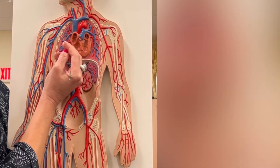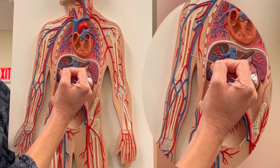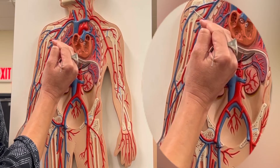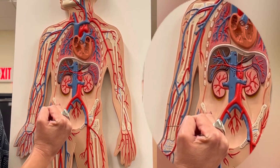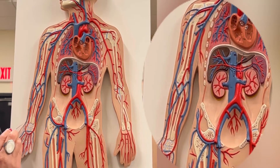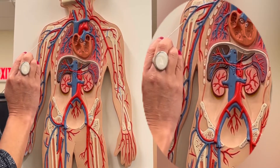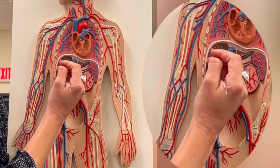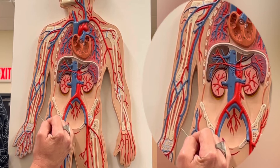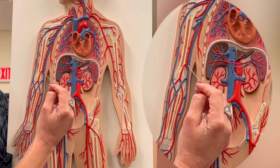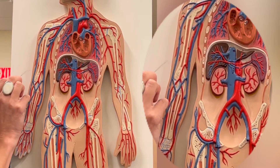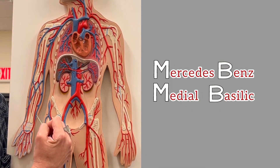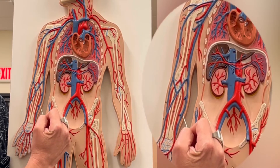We have a vein on the medial aspect of the upper limb and another vein on the lateral aspect. The vein on the lateral aspect of the forearm and arm — the lateral aspect of the upper limb — is named cephalic vein. The vein on the medial aspect is called basilic vein. The basilic is always medial and the cephalic is always lateral. One way to remember that the basilic is always medial is MB — Mercedes-Benz — the medial one is always the basilic.